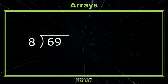Let's try division using an array. 69 divided by 8 would suggest we have 69 items and we need it divided into groups of 8. Let's make an array of groups of 8 up to 69.